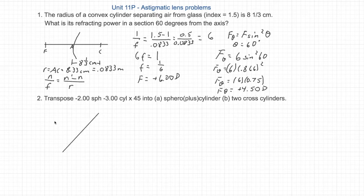So here's an optical cross at 45 degrees and 135 degrees. Minus 2 sphere means it's minus 2 in both meridians. Minus 3 axis 45 means it's minus 3 in the 135th meridian for a total of minus 5.